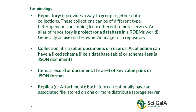The second concept is the collection — a set of documents or records. It's similar to a table in the relational database world, or just a MongoDB collection. A collection is a set of documents in JSON format. Then we have the item — the single record, the single document — which is a set of key-value pairs in JSON format. Then we have an extra feature: the replica or attachment.